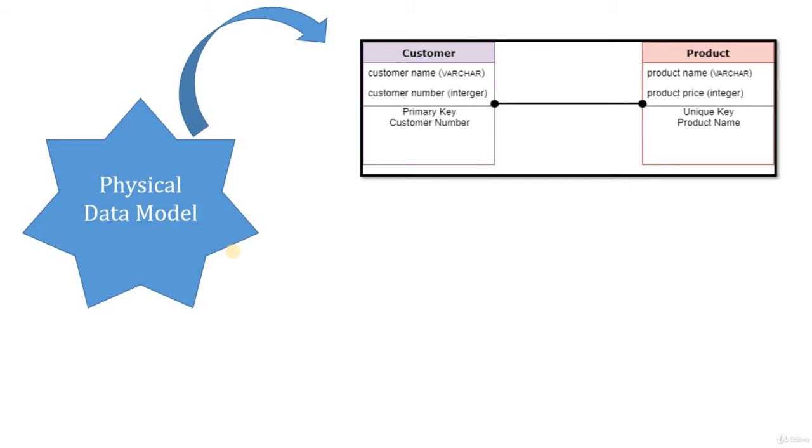Customer name and customer number are the attributes from the customer. Product name and product price are the attributes from product. Now you have this relationship existed between these two entities with sales as a relationship. You are going to define what is the primary key for the customer number and what is the unique key for the product entity. Here they have identified customer number as a primary key for the customer.